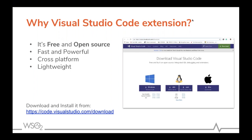VS Code includes support for debugging, embedded Git control, GitHub support, syntax highlighting, intelligent code completion, snippets, code refactoring, and many more features. If you haven't downloaded Visual Studio Code, you can go to code.visualstudio.com. They have options for different OS flavors — you can download Windows, Debian, RPM, and Mac versions.